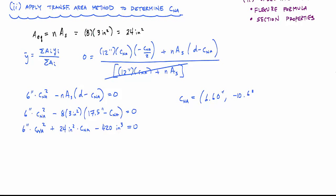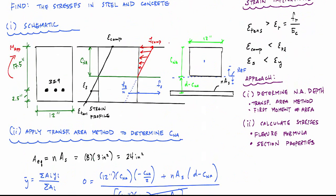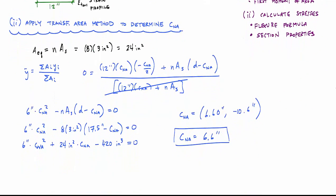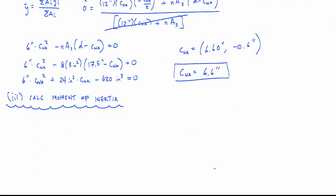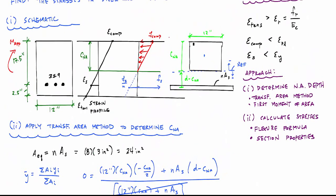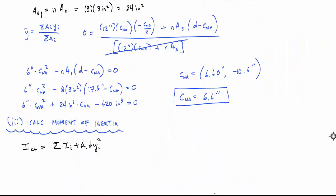Now that the neutral axis depth is 6.6 inches, we can calculate the moment of inertia about the neutral axis. This is called the cracked moment of inertia, and we apply the parallel axis theorem. There are two area elements: the top concrete rectangle (area one: 12 inches × c_na) and the equivalent concrete area of steel (area two: n·A_s).